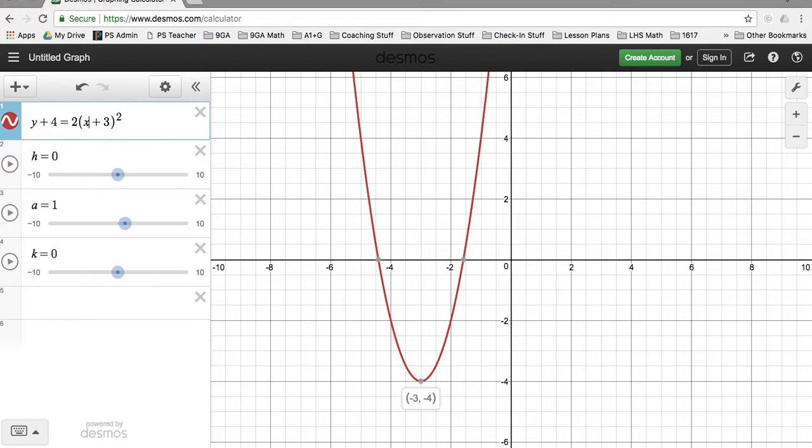So we have plus 3 here, but the vertex is negative 3. Okay, and right here we have plus 4 here. We have opposite of that in the vertex.